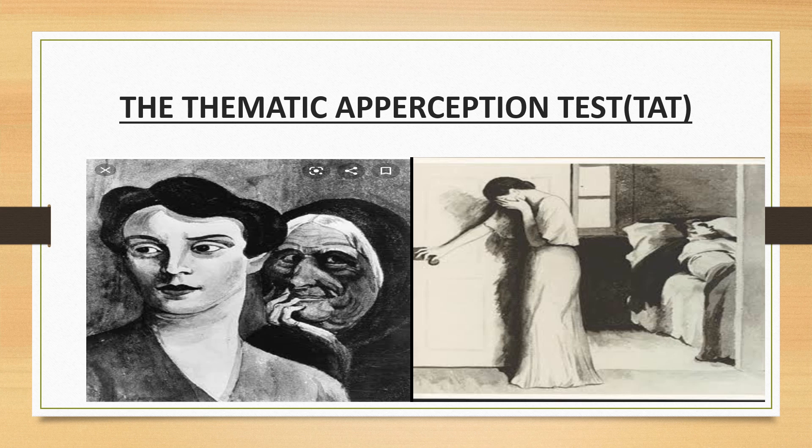Each picture is printed on a card and presented one at a time. The subject is asked to tell a story describing the situation in the picture, what led up to the situation, what is happening at the moment, what will happen in the future, and what the characters are feeling and thinking. A standard procedure is available for scoring TAT responses. The test has been modified for children and aged people. Uma Chaudhuri's Indian adaptation of the TAT is also available. Typically 20 cards are used, though as few as five have been used successfully.